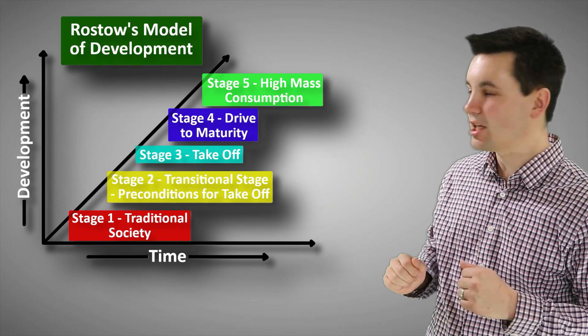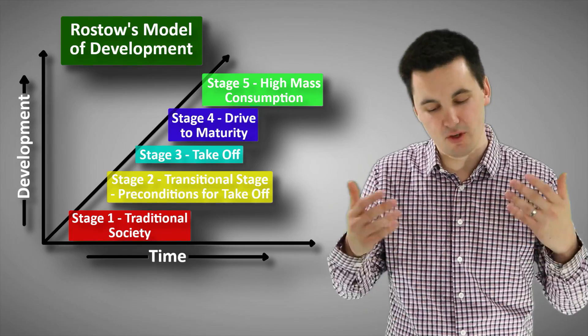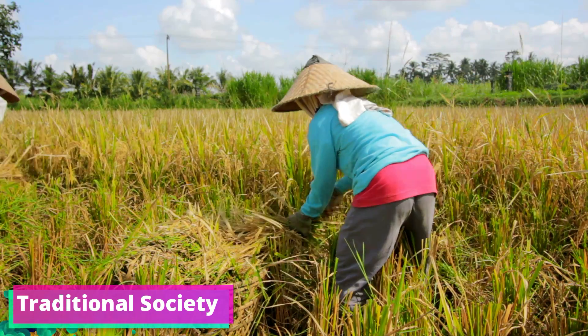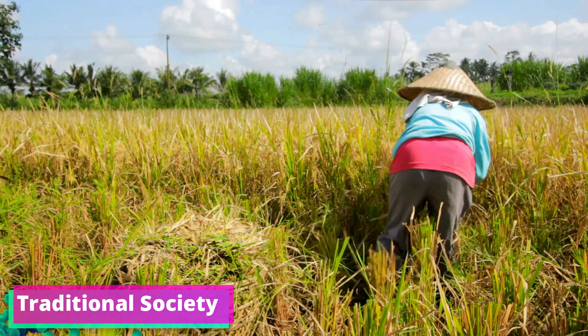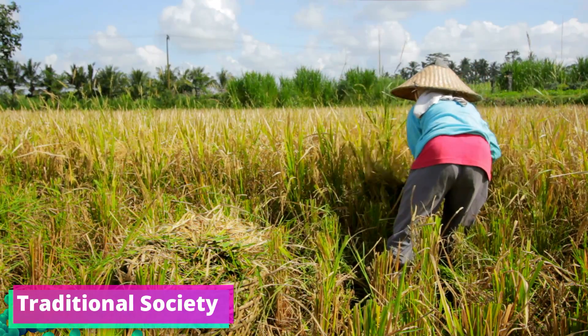When looking at Rostow's Stages of Economic Growth, we can see that all countries have the ability to modernize and develop. The first stage is traditional society. Here the primary focus is on subsistence agriculture. Productivity is low and the majority of the workforce is in the primary sector.